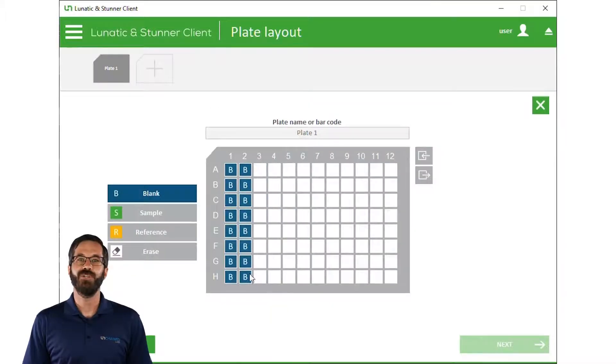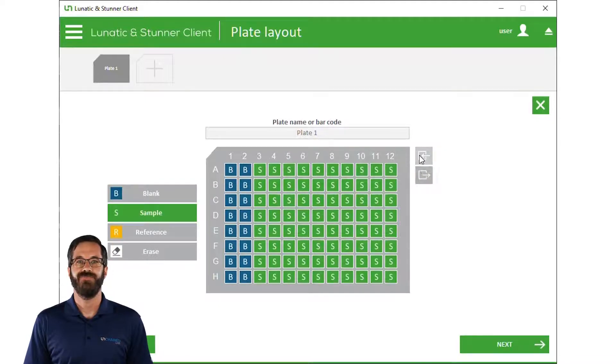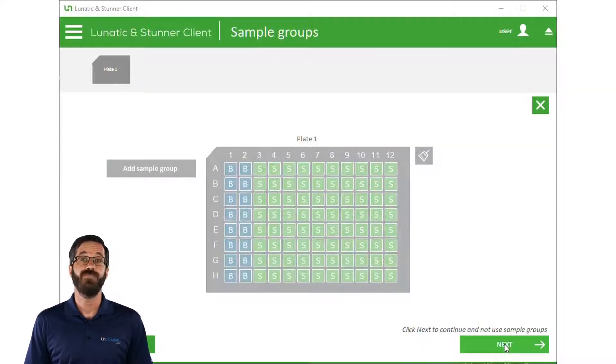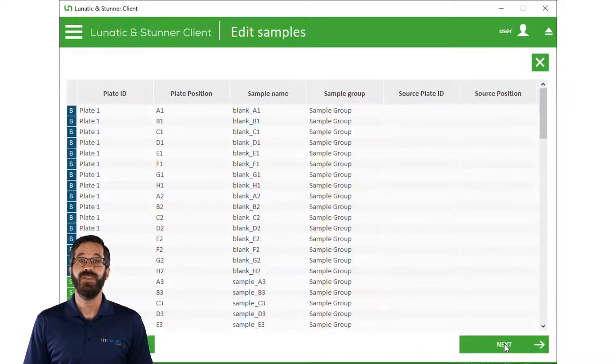Next, we tell the software which wells have sample and which have blank. We can populate a new plate manually or we can simply import and pull in all the information from an Excel file. Then we can apply sample groups. And if we want, we can change sample names as well as review to make sure all the samples are correct.